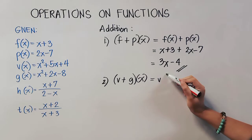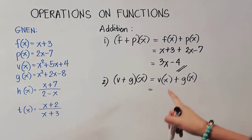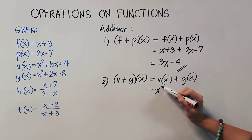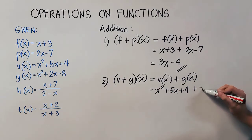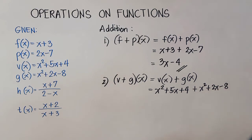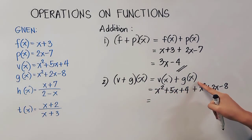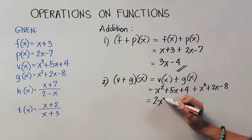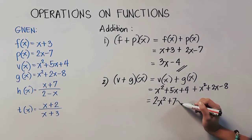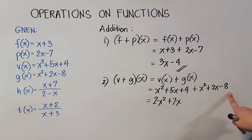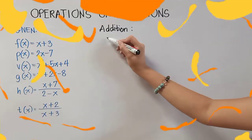Let's proceed to number 2, written as V(x) + G(x). Substituting: V(x) = x² + 5x + 4 and G(x) = x² + 2x − 8. We look for like terms — same variable and exponent. x² + x² = 2x², then 5x + 2x = 7x, and 4 and 8 have different signs so we subtract and take the sign of the bigger number, giving negative 4. This is our answer.